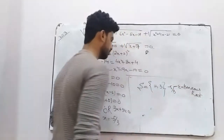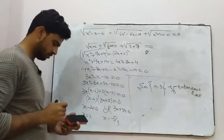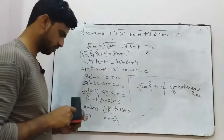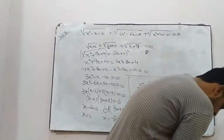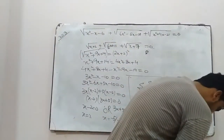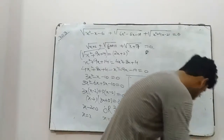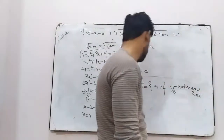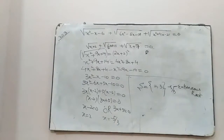The extraneous root negative 5 upon 3 will not be added to the solution set. So the final answer is the solution set {2, 3}.